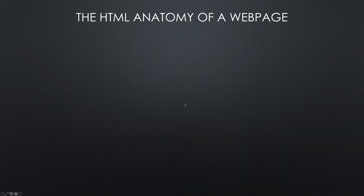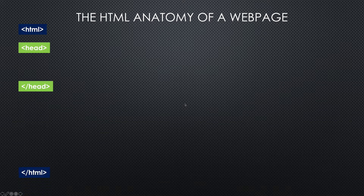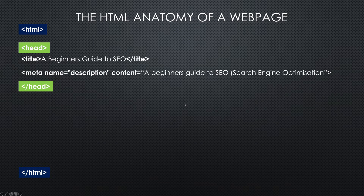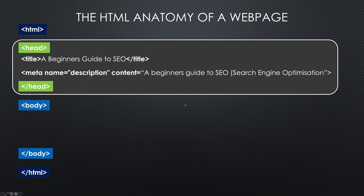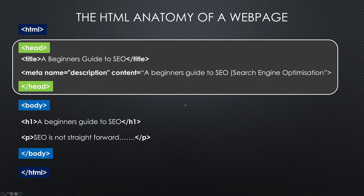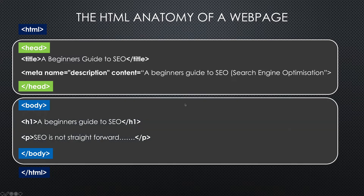The HTML anatomy of a page — the basic building blocks are the opening and closing HTML tags. We've got the head, with a title and a meta description. Notice it's called meta name equals description, content equals, but called the meta description. And that's the head done. The body contains the H1 — you must always have an H1 for compliance with W3C, the World Wide Web Consortium. There's a paragraph. That's the body — that's where the content goes.